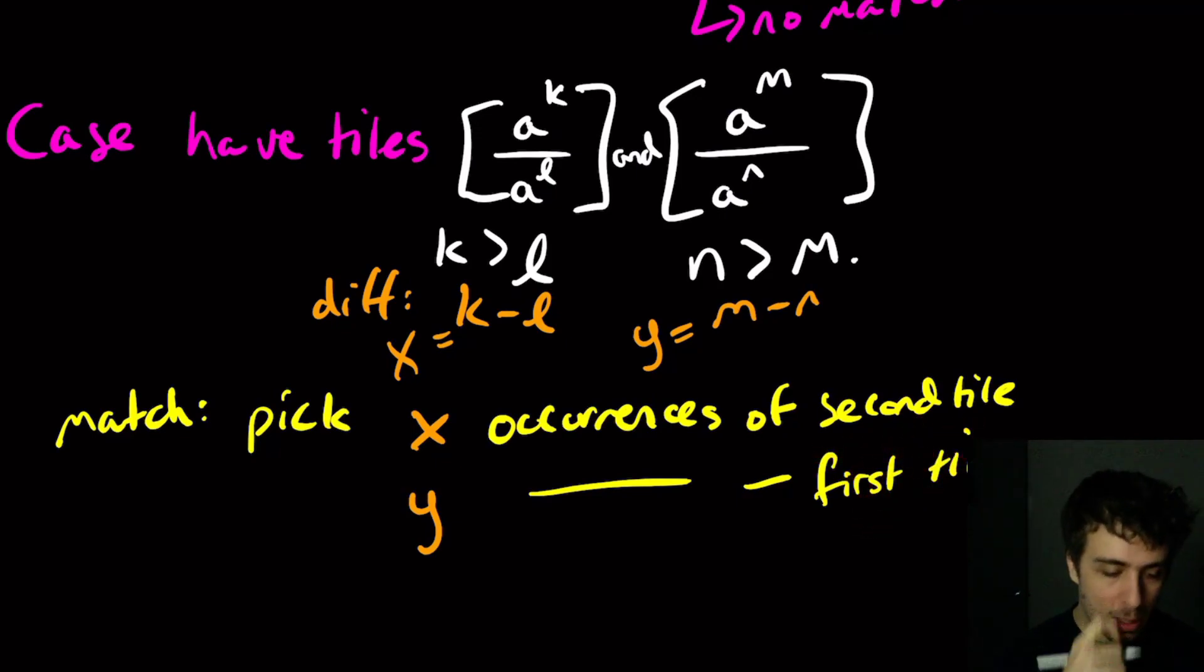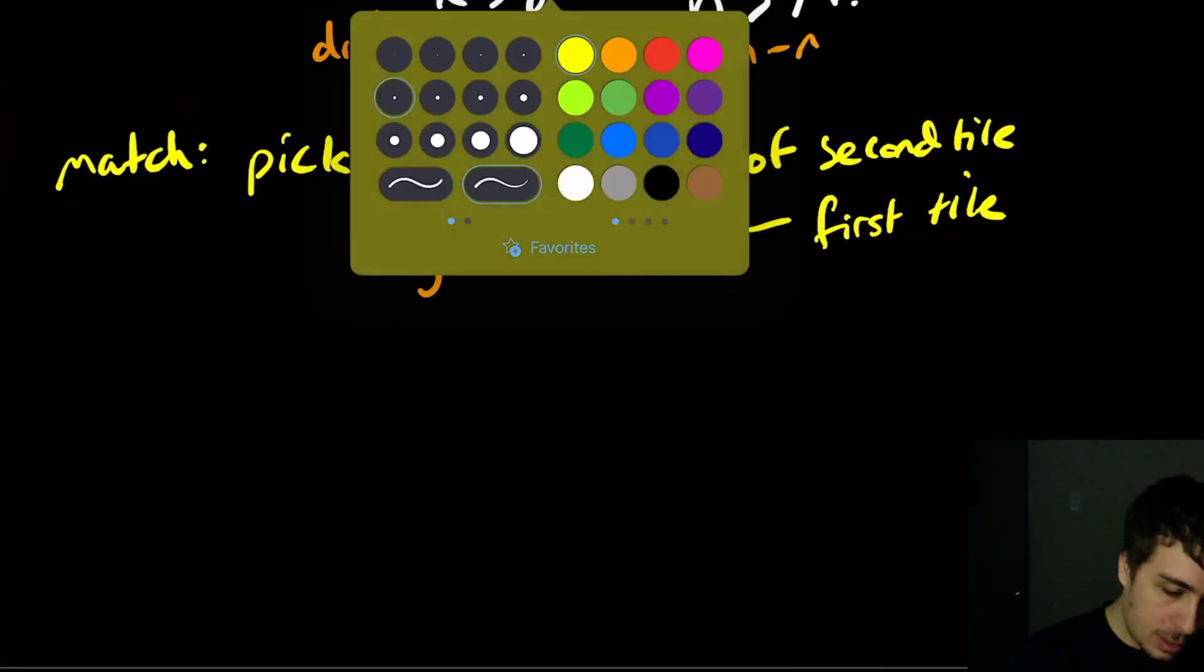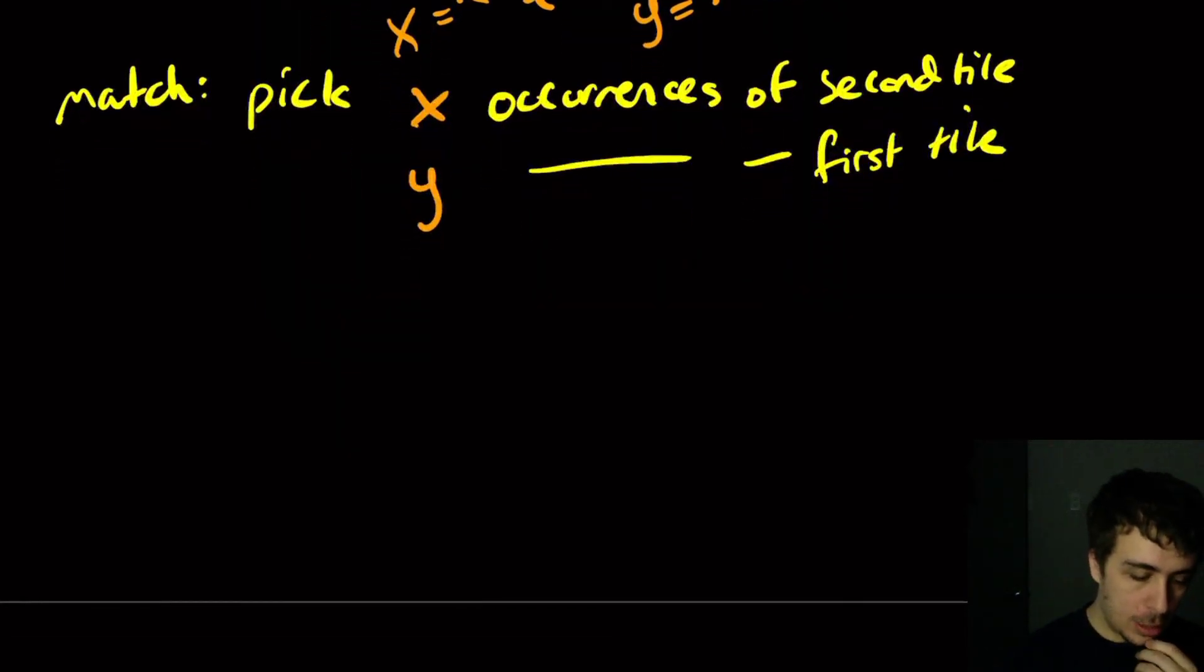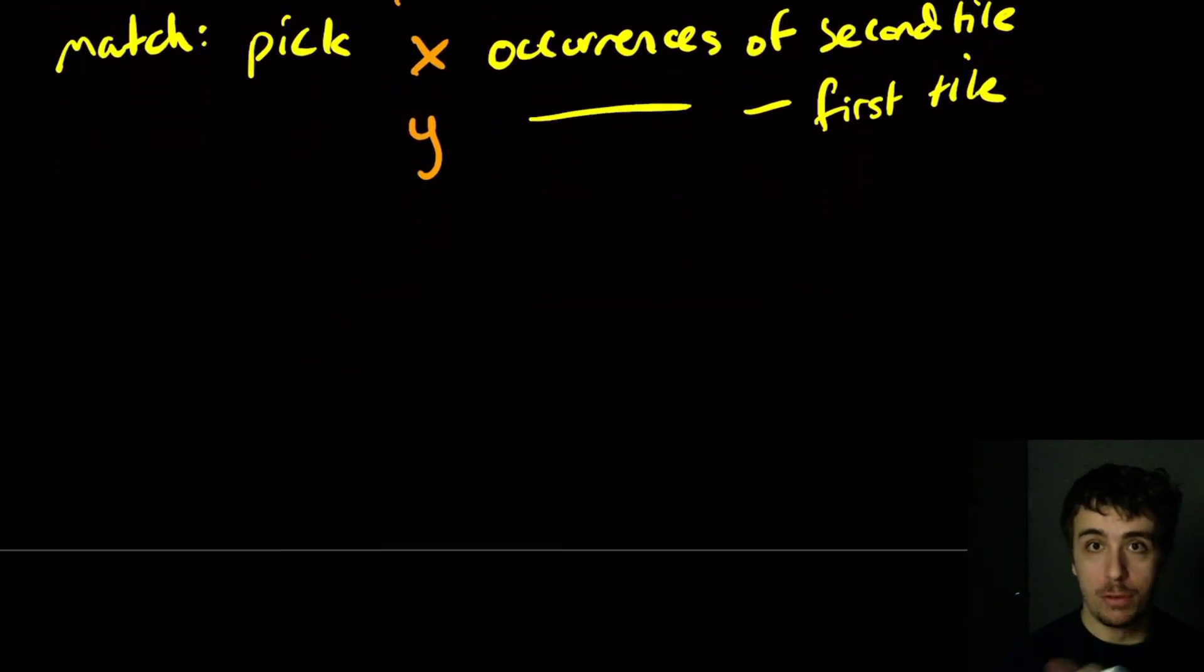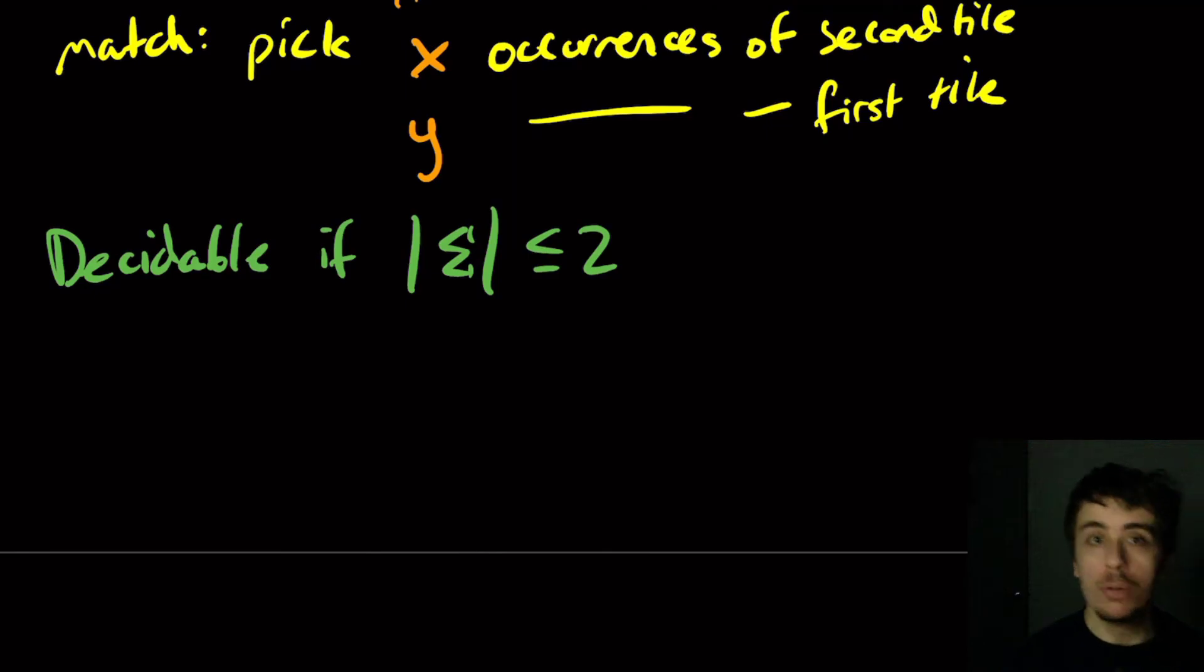And so this problem is decidable as a result. So I'll show you an open problem for this, for the post-correspondence problem. So it turns out to be decidable if the size of the alphabet is at most two. We showed where the size of the alphabet is one. It turns out that it's also decidable for two characters.